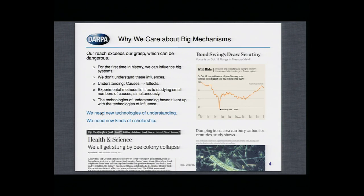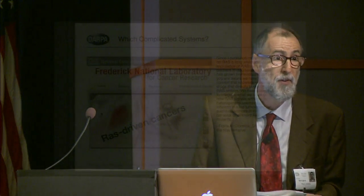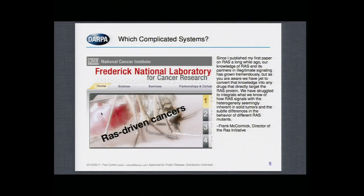For these reasons, to try to develop technology to provide system-level understanding, we created the Big Mechanism program at DARPA, the goal of which is technology to understand complicated systems. We're surrounded by complicated systems we don't understand well — the climate, ecosystems, socioeconomic systems, energy systems, food systems, and cancer. Fortuitously, we decided to work on signaling pathways in cancer and bumped into Frank McCormick. He said, ten months ago, why not work on RAS? And we said, what's RAS? And we got started. RAS is now the focus of the Big Mechanism program.